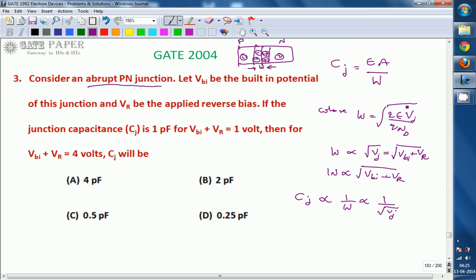This square root is for abrupt PN junction. If it is linear graded, at that time 1 by 3rd root of Vj is used.